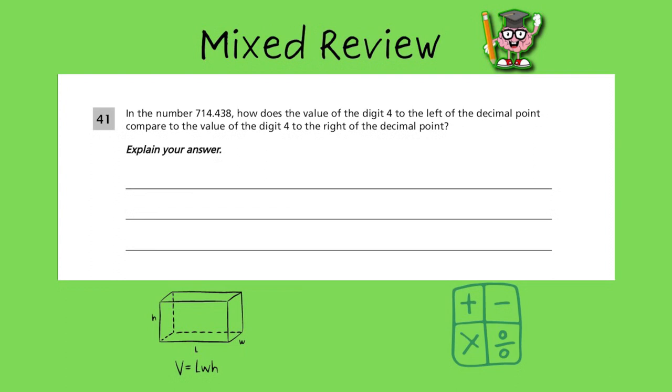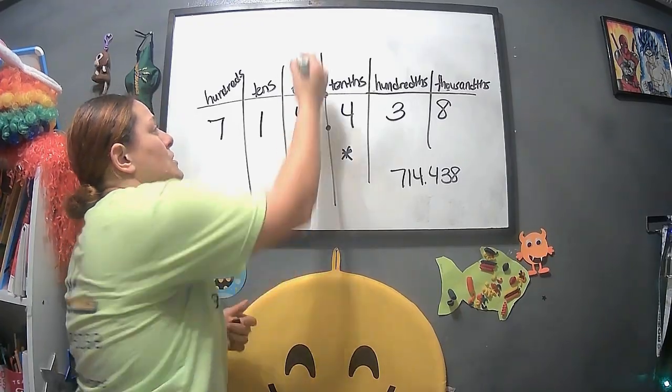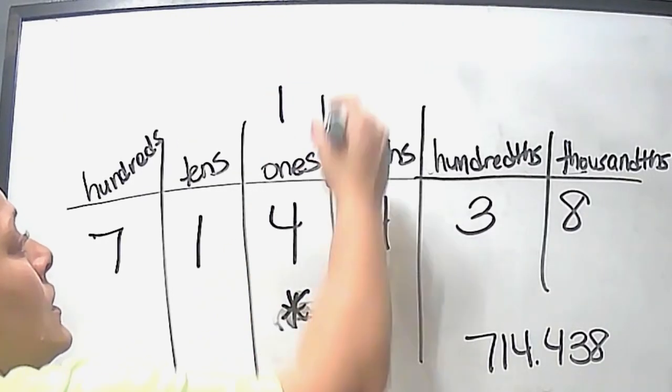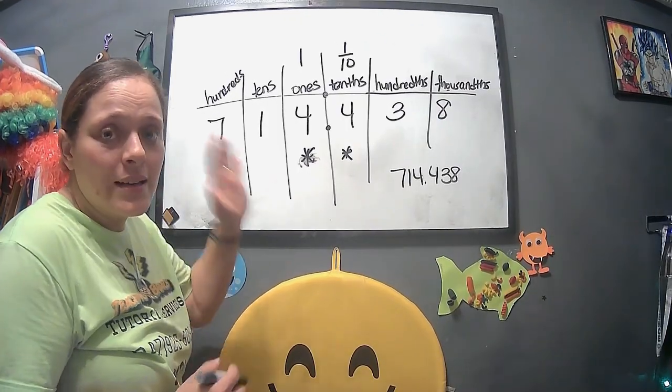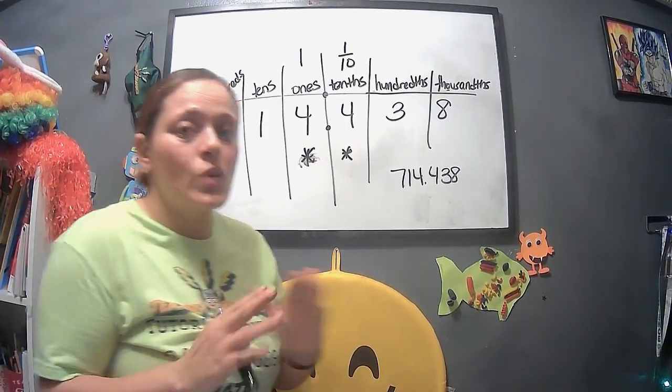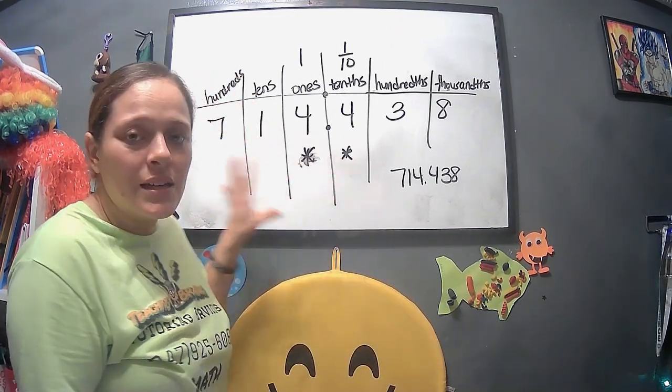It's asking, what is the value of the 4 to the left of the decimal, right? This is the one we're talking about. And the value of the digit 4 to the right of the decimal. So they want us to compare these two. Now, what I always do is I always remember it as 1, and then 1 tenth is the same thing as 1 over 10. This one is an open-ended question, so you have to write it out. I can't write that out for you, but that's the information. From there, you write it in your own words.